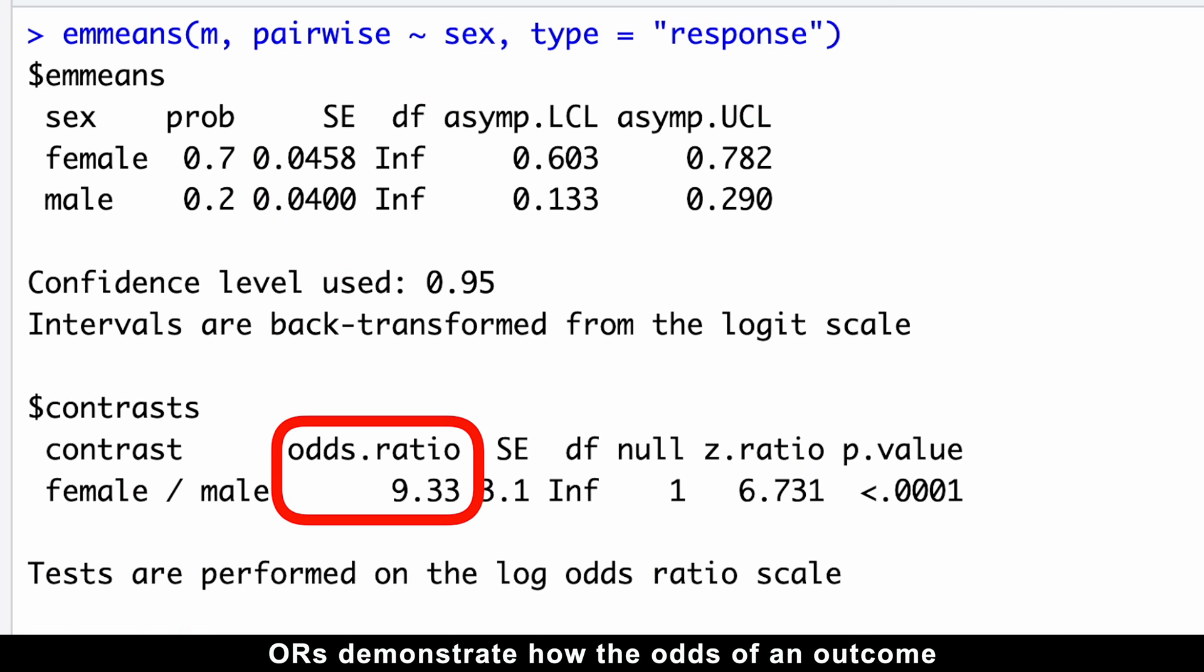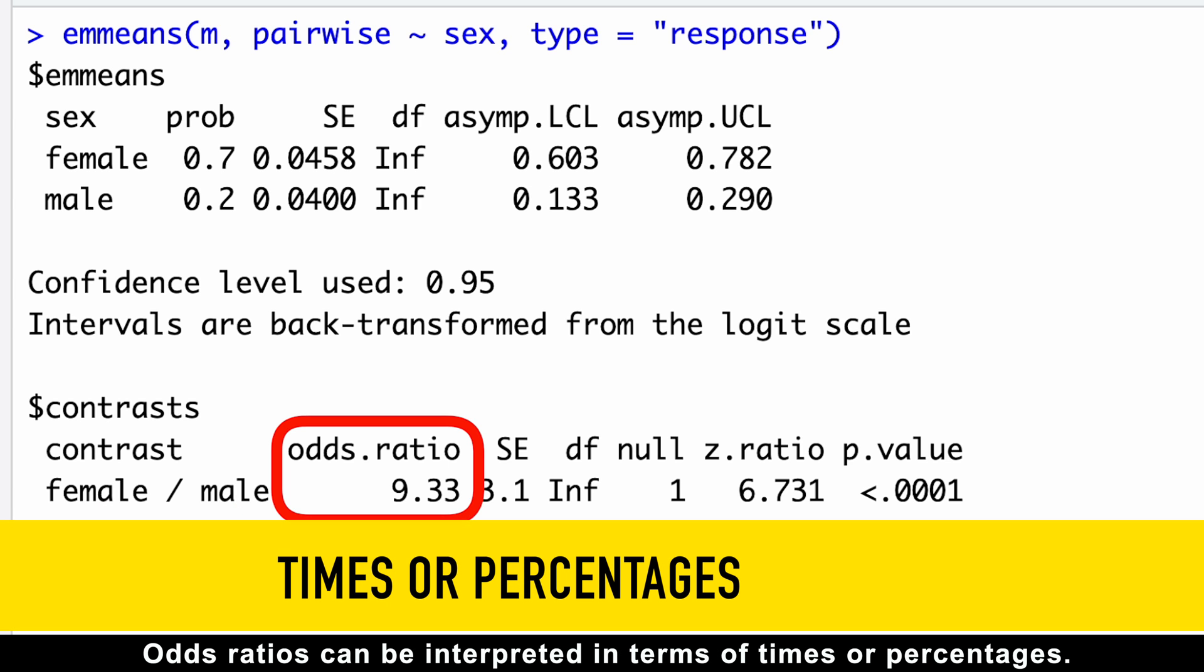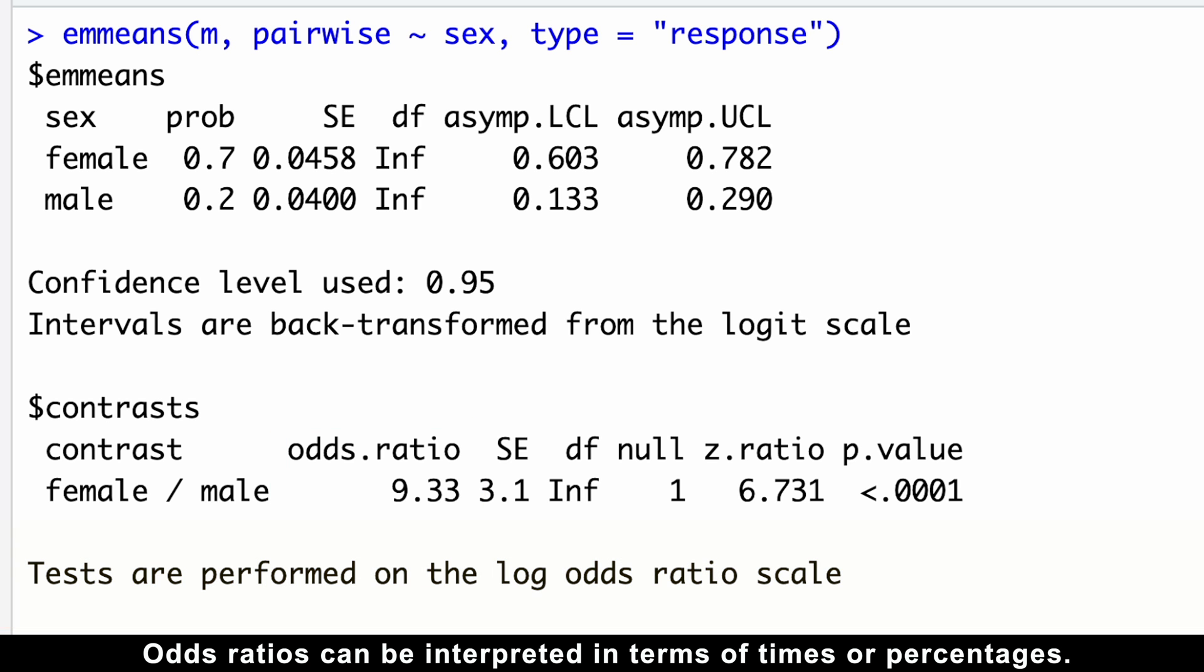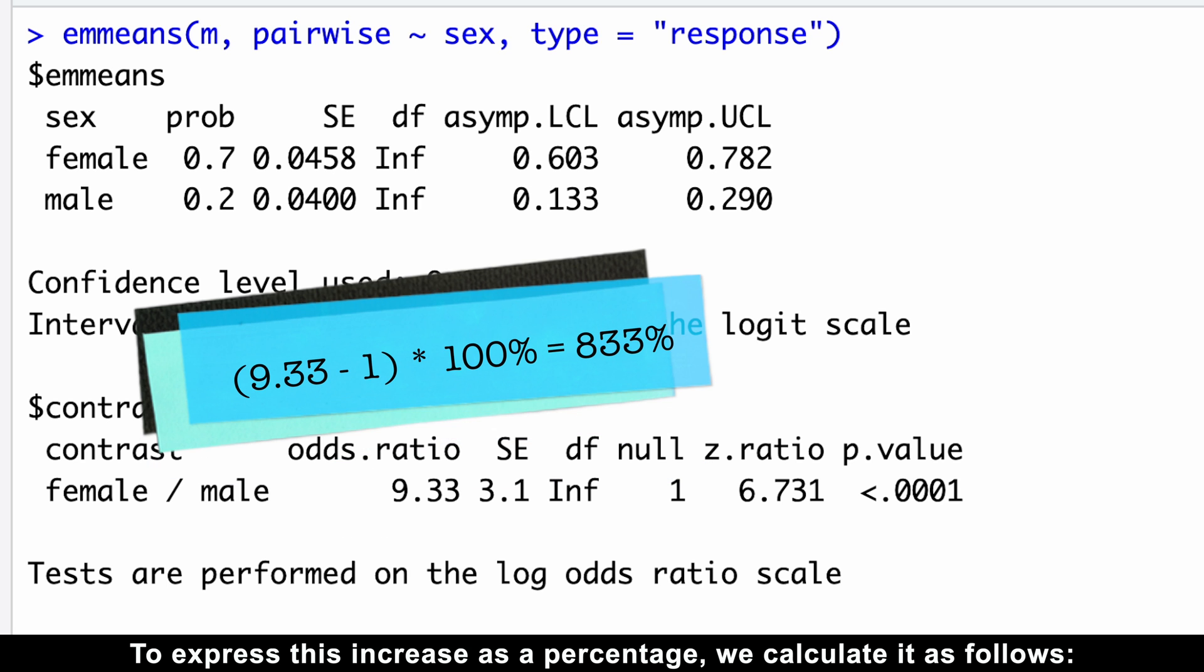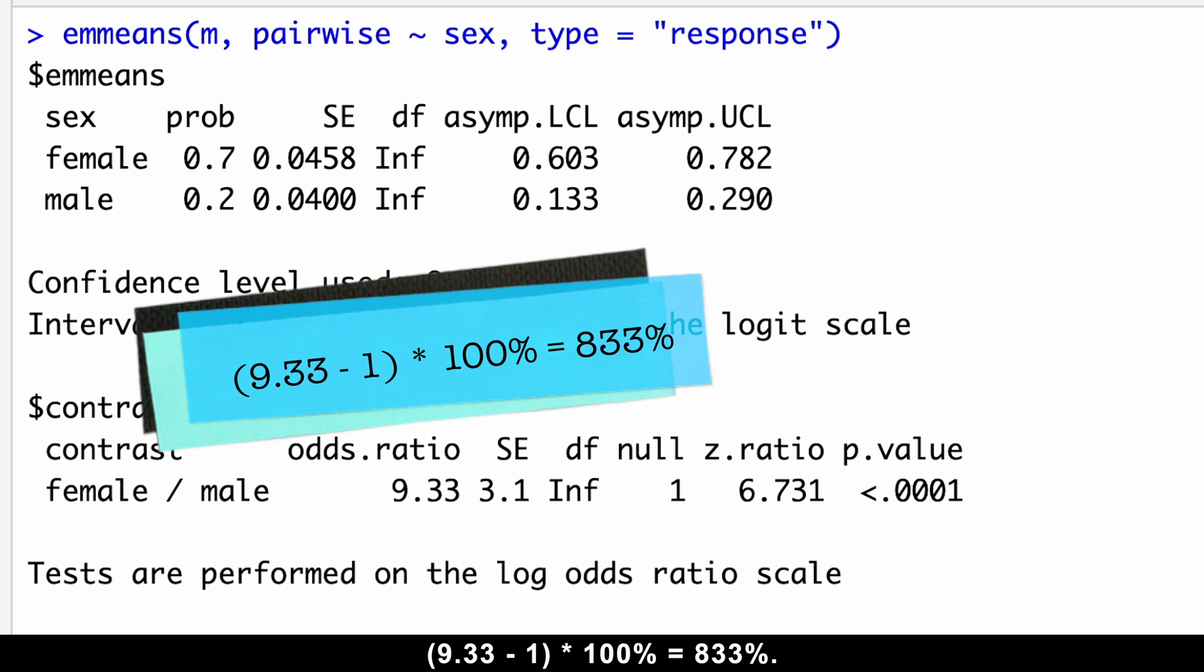Odds ratios demonstrate how the odds of an outcome change with a one unit increase in the predictor variable. Odds ratios can be interpreted in terms of times or percentages. In our specific case, the odds of female survival on the Titanic are 9.33 times greater than the odds of male survival. To express this increase as a percentage, we calculate it as follows: 9.33 minus 1 times 100 equals 833%.